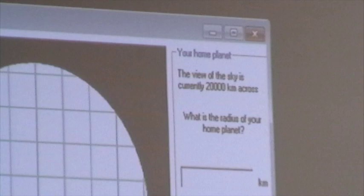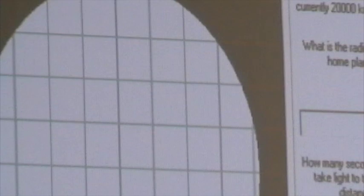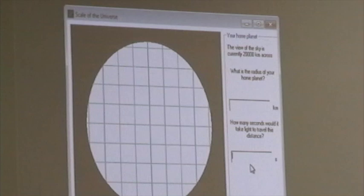This also tells us that the view of the sky is currently 20,000 kilometers across. So what that tells me is that each one of these squares, there are 10 of these squares on the grid, and each one of those squares is worth 2,000 kilometers.